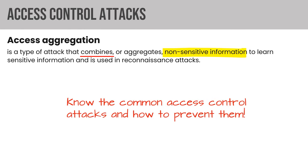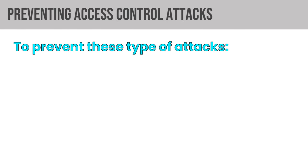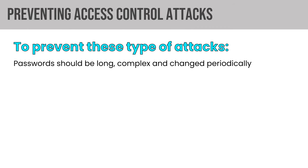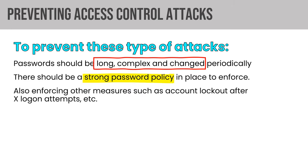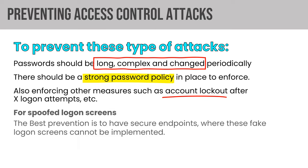To prevent access control attacks: passwords should be long, complex, and changed — use password policies to enforce complexity and history. Enforce account lockout after a set number of failed logon attempts. For spoofed logon screens, the best prevention is having secure endpoints where fake screens can't be implemented. For external spoofed login pages, phishing protections help address that exploit.